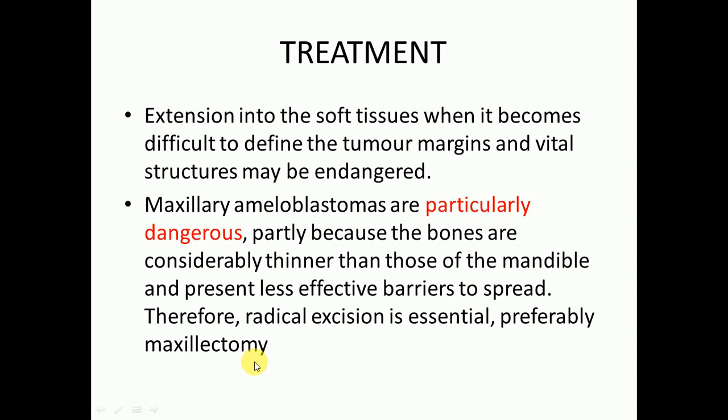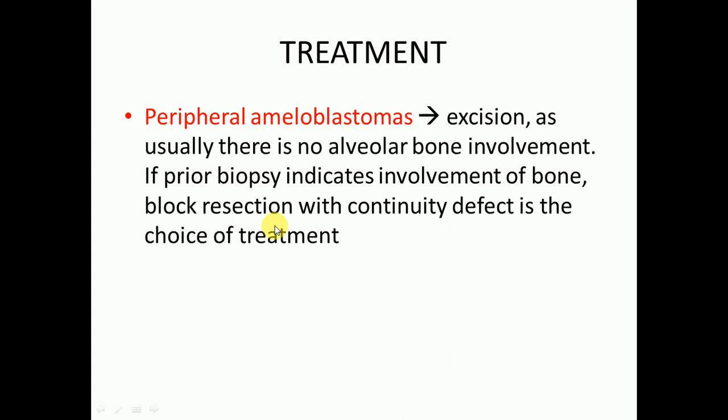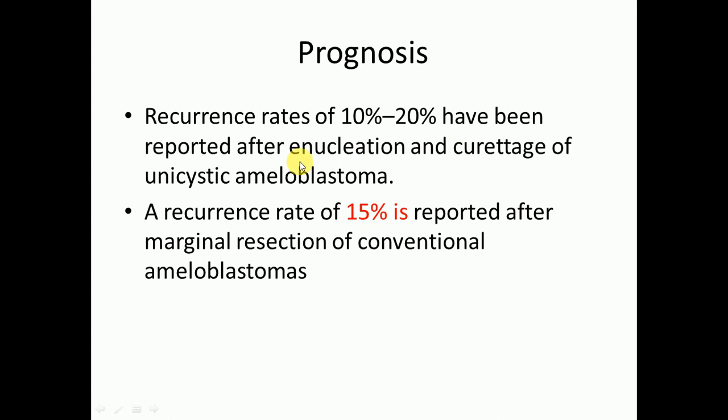For peripheral ameloblastoma, excision is usually sufficient as there is typically no alveolar bone involvement. If prior biopsy indicates bone involvement, block resection with continuity defect is the choice of treatment. Regarding prognosis, a recurrence rate of 10 to 20% has been reported after enucleation and curettage of unicystic ameloblastoma, and a recurrence rate of 15% is reported after marginal resection of conventional ameloblastoma — making resection preferable over enucleation and curettage.